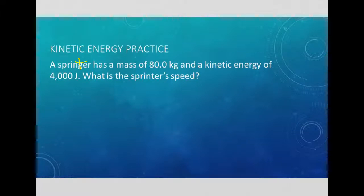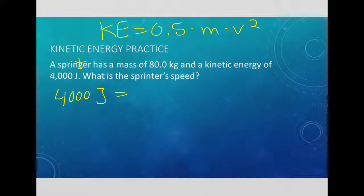Okay. So again, kinetic energy equation, KE equals 0.5 times mass times velocity squared. So our kinetic energy is 4,000 joules. We have 0.5, our mass is 80 kilograms and we're solving for speed.